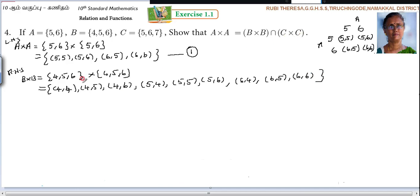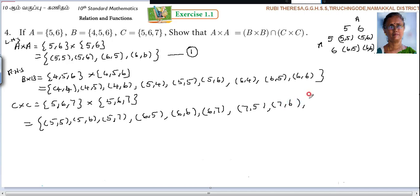Next what you should find out, C cross C. So what is C? {5,6,7}. So {5,6,7} cross {5,6,7}. In the same way you should write. 5 is paired with 5, 6, 7, so (5,5), (5,6), (5,7). Next 6 you are taking. Then 6 is paired with these 3 elements, so (6,5), (6,6), (6,7). While you are writing you should write carefully. Then 7 the same way, so (7,5), (7,6), (7,7).